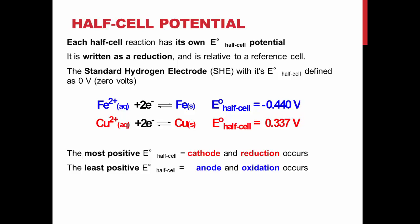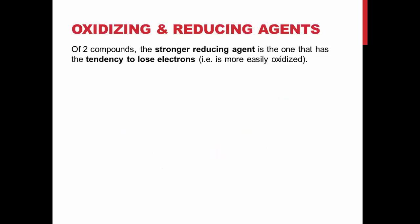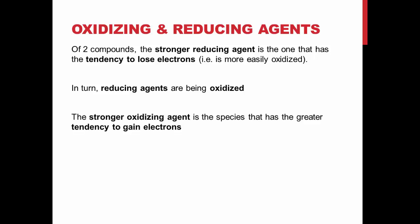Of two chemical species, one will have a greater ability to lose electrons, becoming oxidized. This compound is a stronger reducing agent, and will cause the other species to be reduced. In turn, the other species will be a stronger oxidizing agent, with a better ability to gain electrons and become reduced, causing the first species to become oxidized.